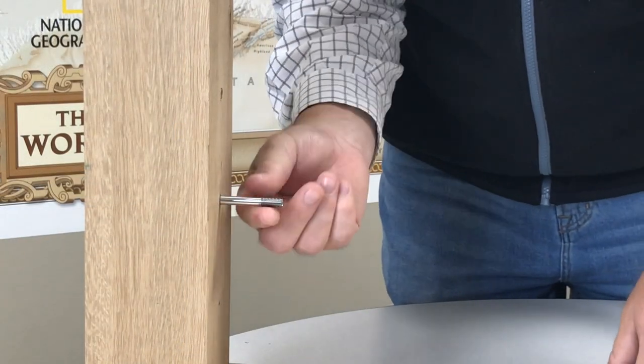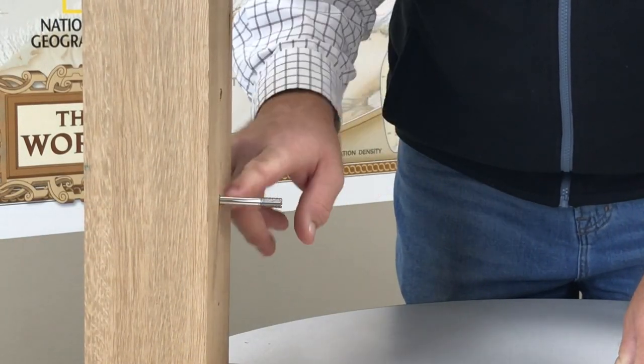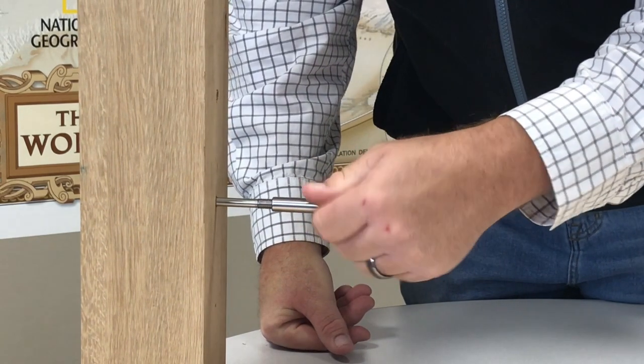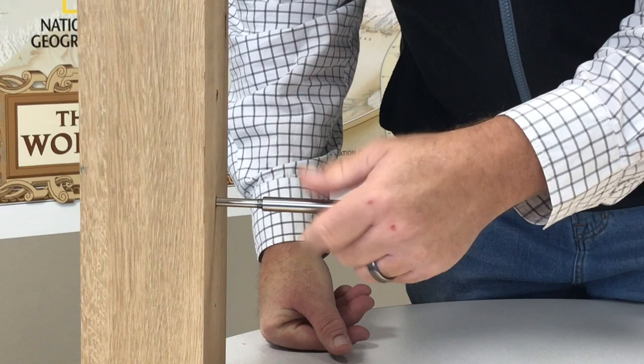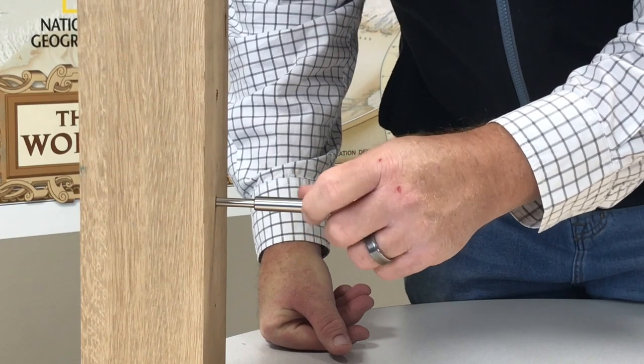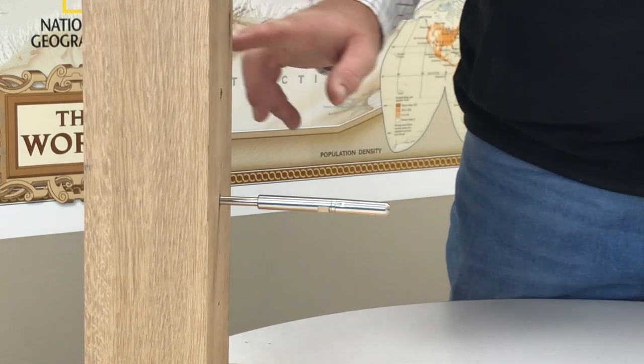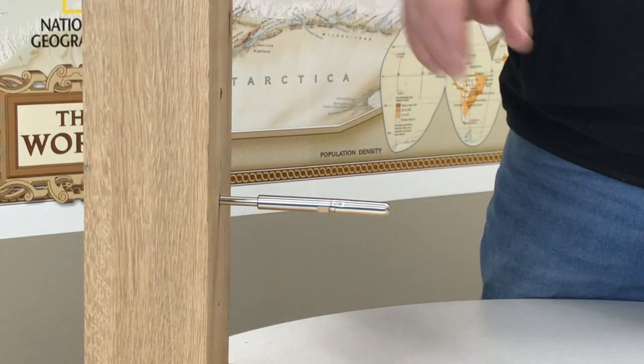Once you have the first part of the tensioning end installed into the post, then you want to put the remainder of it onto the threaded portion and you're going to run this up until all of the male threads have been covered. You're going to stop from there and next we'll measure and cut the cable to go into both ends.